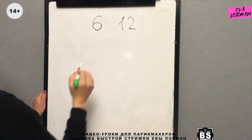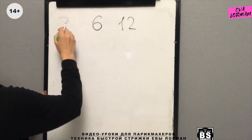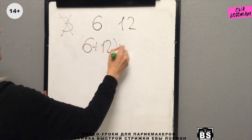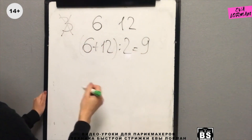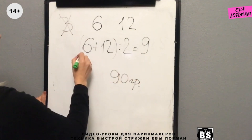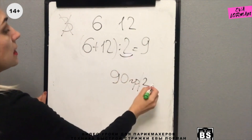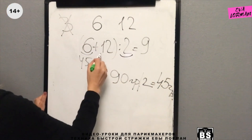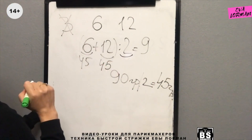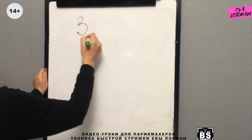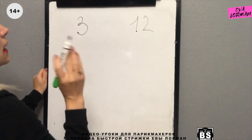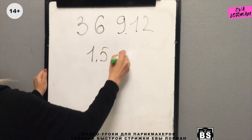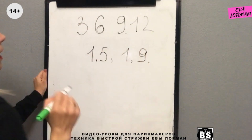If we have 6% and 12%, we can also make 9% by dividing 6% plus 12% by 2. If we need 90 grams divided by 2, we take 45 grams of 6% and 45 grams of 12%. If you have 3% and 12% oxides, you will be able to make many variants. Therefore, it is these oxides that must always be available.